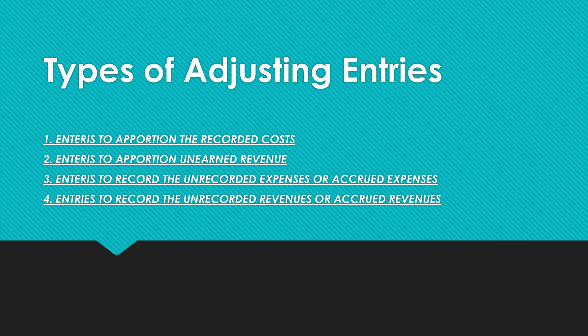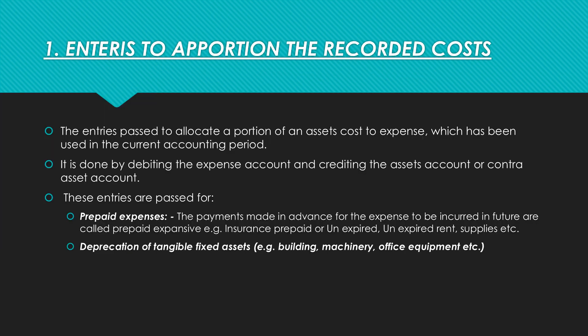Today we are discussing apportioning the recorded cost adjusting entry. There are four types of adjusting entries: entries to apportion the recorded cost, entries to apportion unearned revenue, entries to record unrecorded expenses or accrued expenses, and entries to record unrecorded revenues or accrued income. These entries are passed to allocate a portion of an asset account to expense which has been used in the current accounting period. It is done by debiting the expense account and crediting the asset account or contra-asset account — contra meaning opposite to that respective asset account.